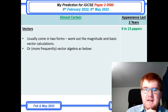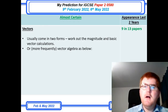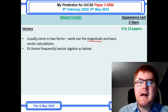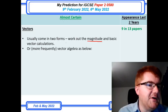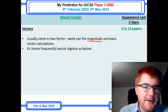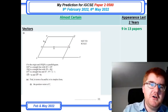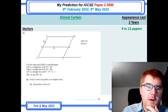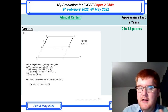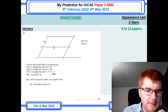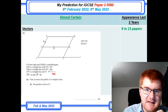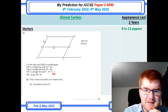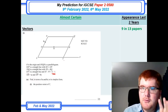On we go to vectors, which come in two main forms. One type asks you to work out the magnitude of a vector and basic adding and subtracting of vectors. But more frequently, particularly towards the end of a paper, you'll see vector algebra. They'll split lines into certain ratios — here they're splitting ST and TV in the ratio two to one — so keep that in mind when you form these vectors. This is a very typical kind of question.